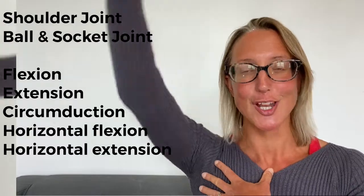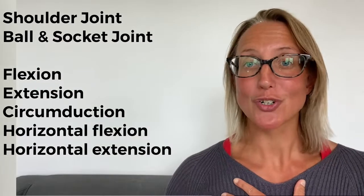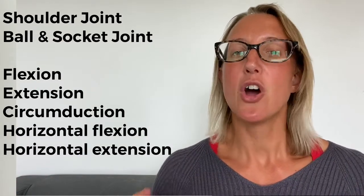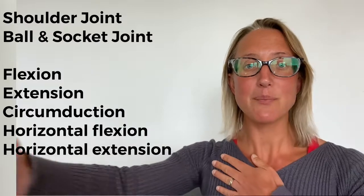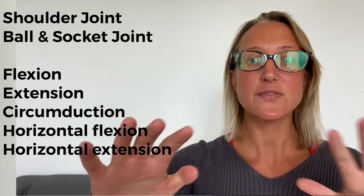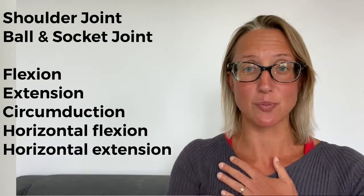The shoulder joint is a ball-and-socket joint, and if you don't already know all the actions you can do at this joint, click the link in the card for another video that breaks down all movements of the shoulder joint and shoulder girdle, which are two very different joints. The ball-and-socket joint will allow flexion, extension, circumduction all the way around, and also horizontal flexion and horizontal extension — almost like a pec fly motion. That's very different from flexion and extension in the sagittal plane going forward and backwards.